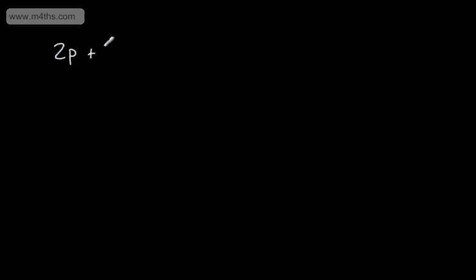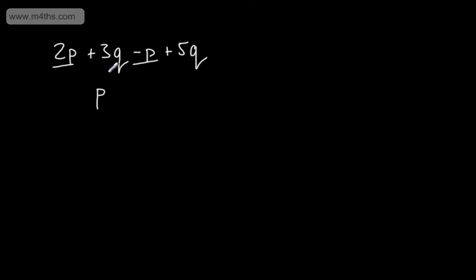Let's say I had 2p plus 3q minus p plus 5q. We know that we can collect like terms. So I can collect the p's — that's going to give me 2p minus 1p, which is just p. Then we collect the like terms with the q's, and we're going to have 8q. So we can simplify this and write it as p plus 8q.